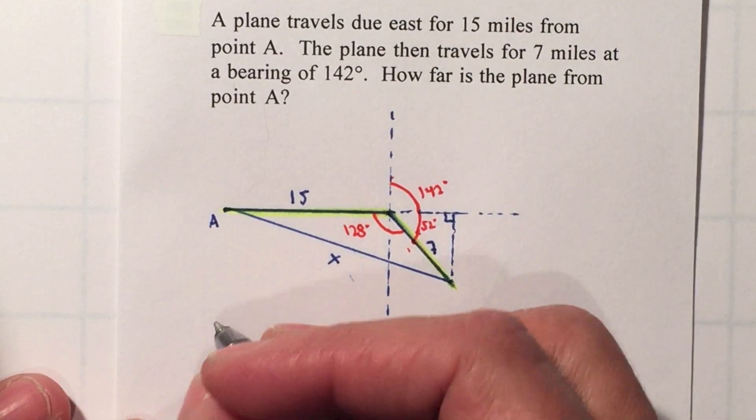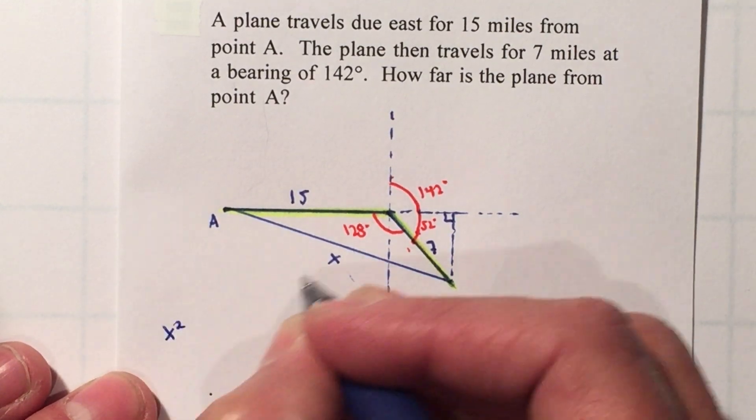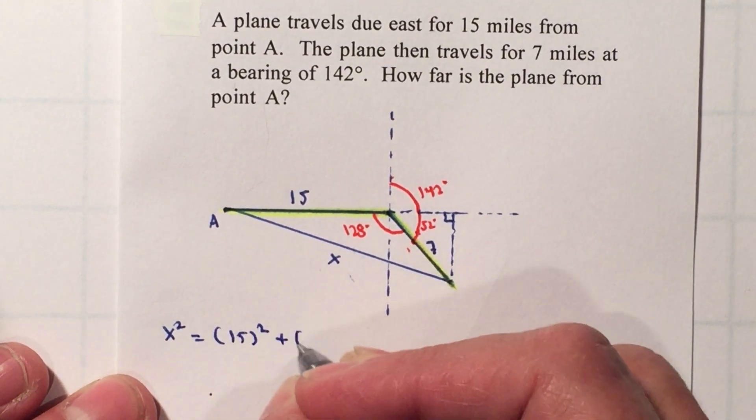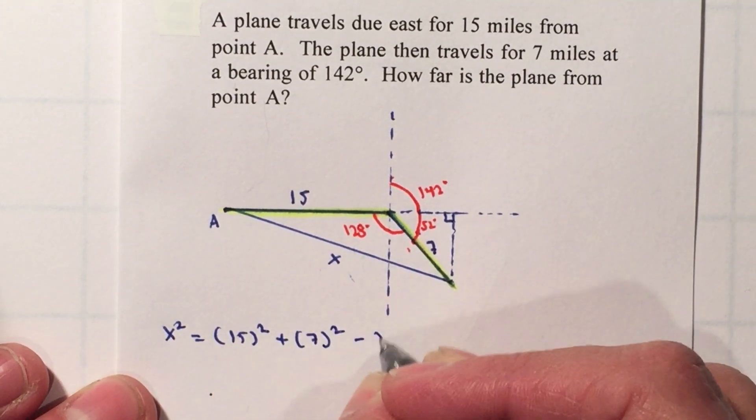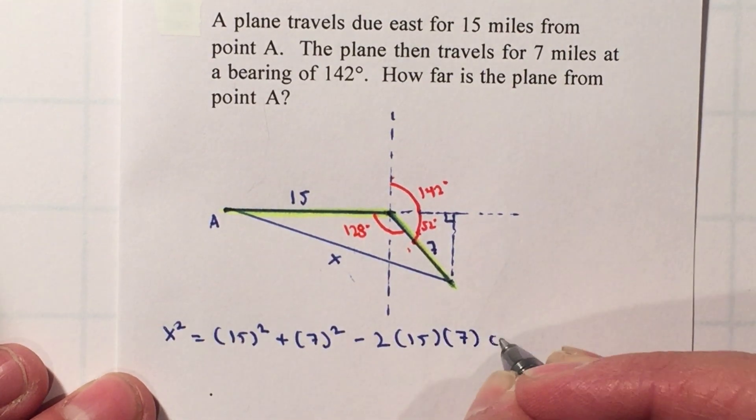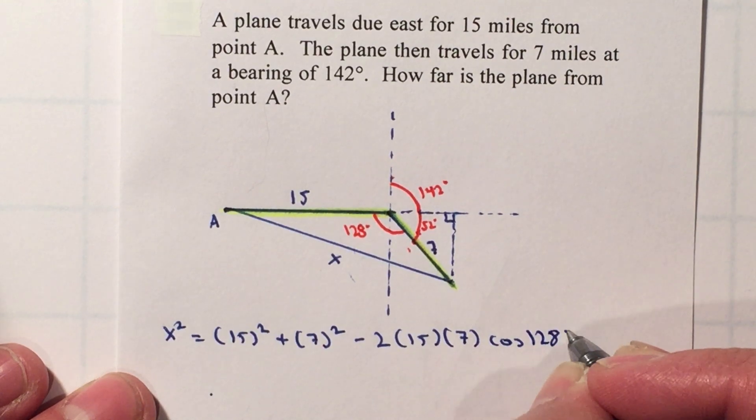So therefore x² (that's what I'm looking for) is equal to one side, 15², plus 7², minus 2 times 15 times 7 times cosine of the angle between, which is 128°.